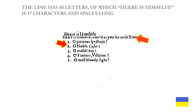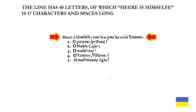It's a homophone of the number 40. In another way of getting to the number 40, the line has 40 letters, of which 'Here is himself' is 17 characters and spaces long.